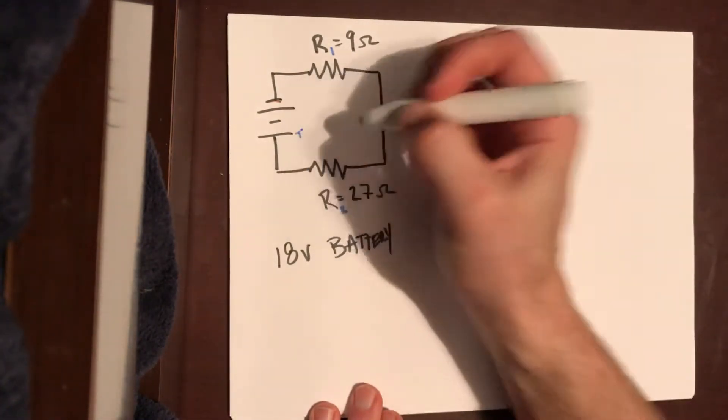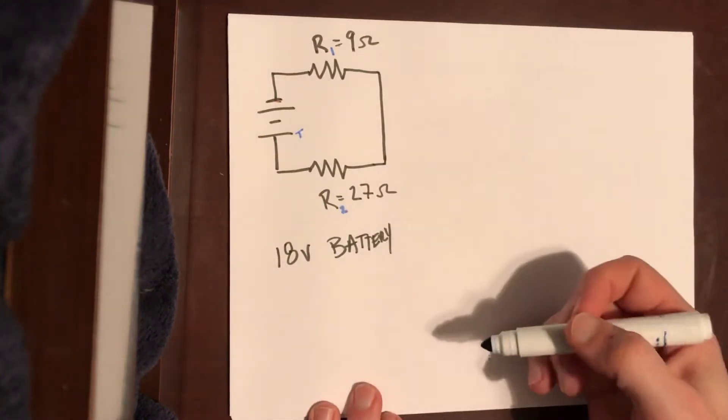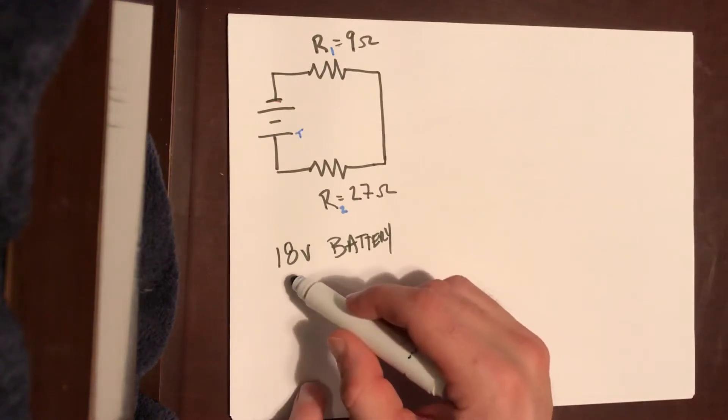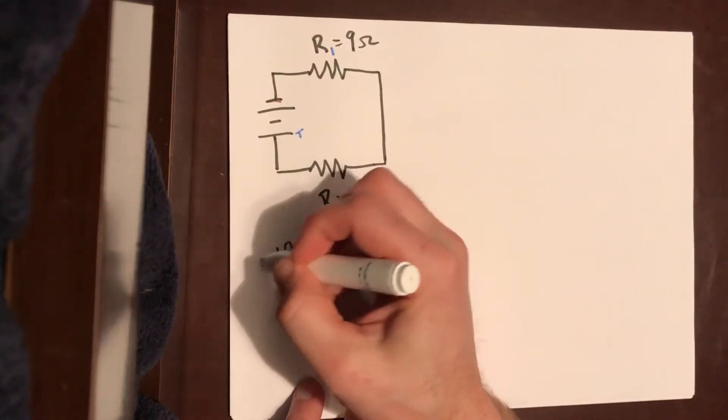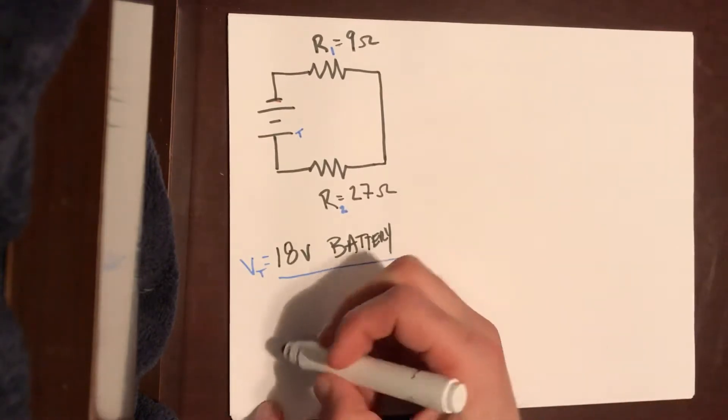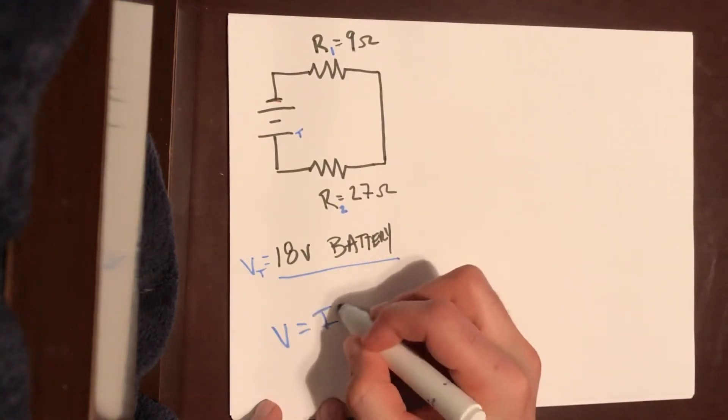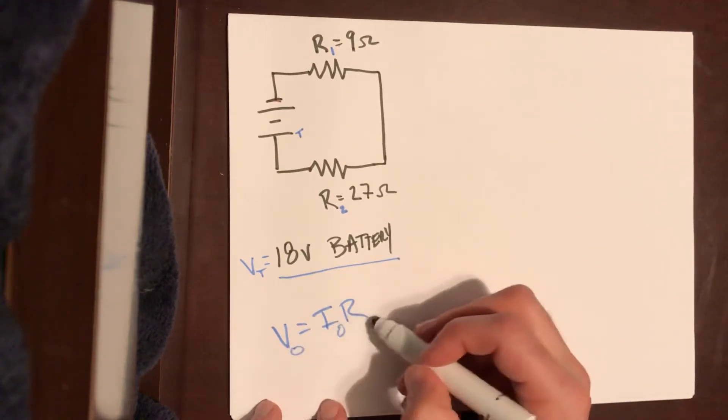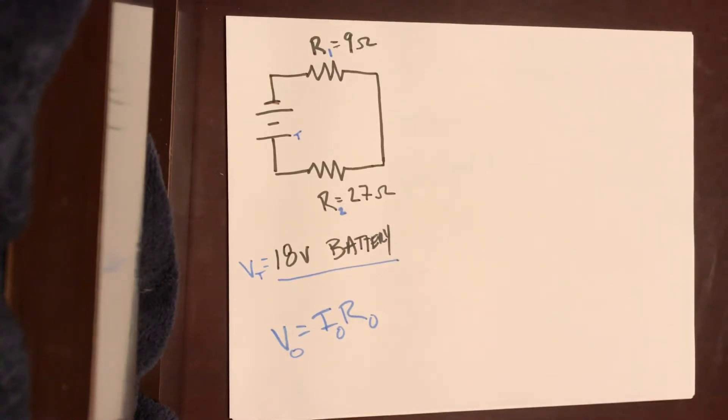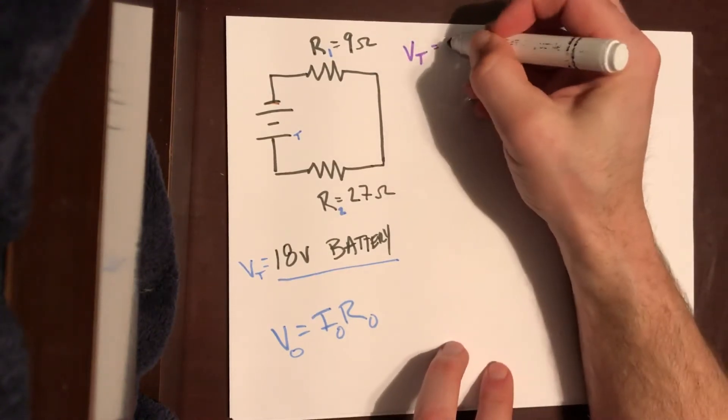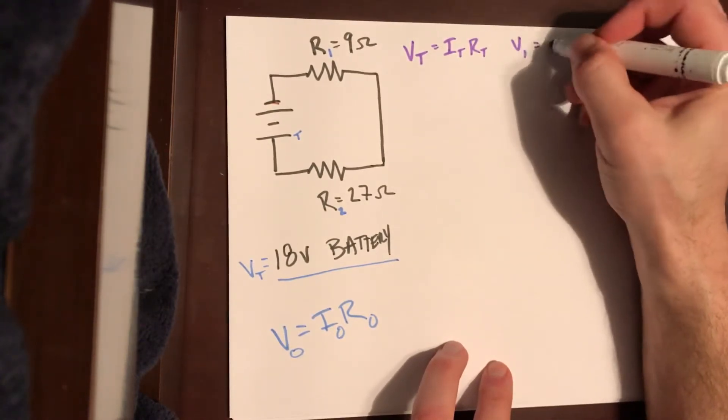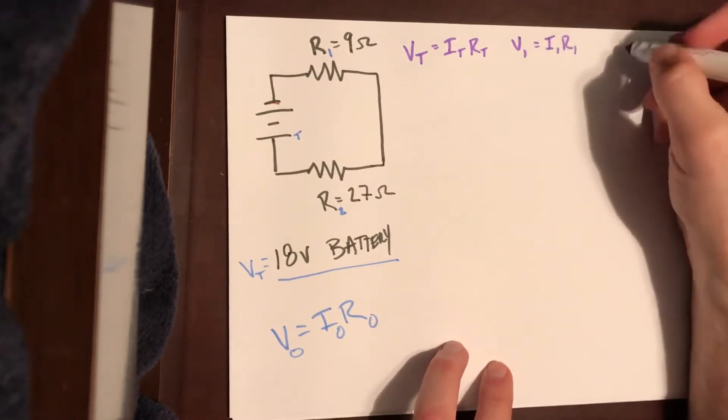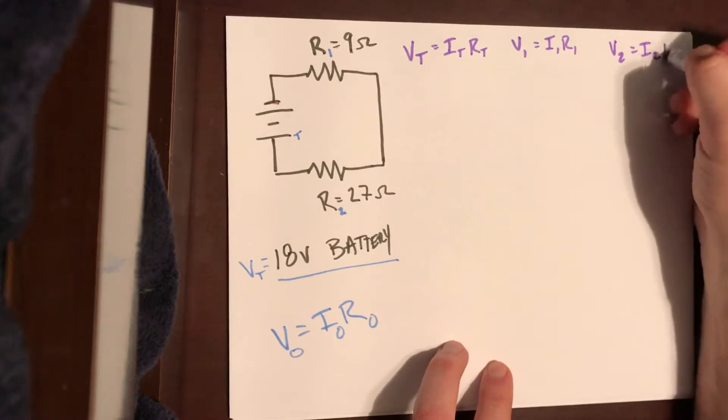We're always going to label the battery as total, so we have one, two, and total. Those are our three objects. This also says that this is an 18 volt battery. Being an 18 volt battery means that goes with the total, so this right here is going to be for our V total when we write down Ohm's law. Now remember that Ohm's law we write as V equals IR, and then we put subscripts that match the subscripts we have up there. So I'm going to write down Ohm's law for each one of these things: V total equals I total R total, V1 equals I1 R1, and V2 equals I2 R2.